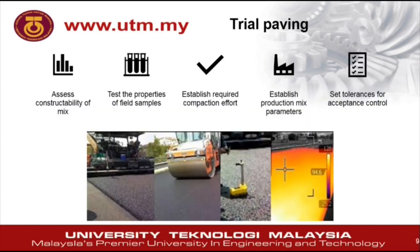After the plant trial is verified, trial paving is undertaken to assess the field performance of the mix. This is to assess the constructability and workability of the mix, and to evaluate the properties of field samples taken after paving. It is also used to establish the required compaction effort in terms of number of rolling passes to achieve the target compaction density, and to establish production mix parameters and tolerances for quality control or work acceptance.